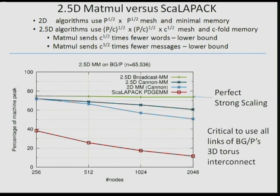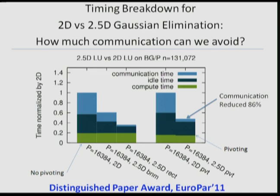For Gaussian elimination: a 128k matrix on 16,000 processors. Comparing the two-dimensional algorithm versus the new algorithm, broken down into communication time, idle time, and compute time: communication time reduced by 86%, idle time improved substantially, and the overall speed-up is about a factor of two — but much of the energy is also eliminated. This work won a distinguished paper award at EuroPar, and all performance data will appear at Supercomputing '11.